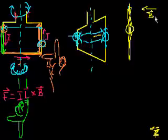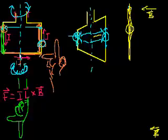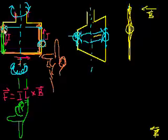Where I left off in the last video, we saw that if we had a magnetic field coming in from the right, and we had this loop of metal or a circuit carrying a current coming in one direction. You can imagine positive protons, although we know the electrons go in the other direction. Using the right-hand rule and this formula, the net force of the magnetic field on one arm of the wire is net downwards, and on the other arm it was net upwards.